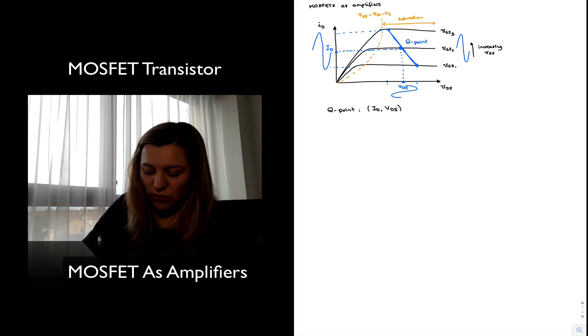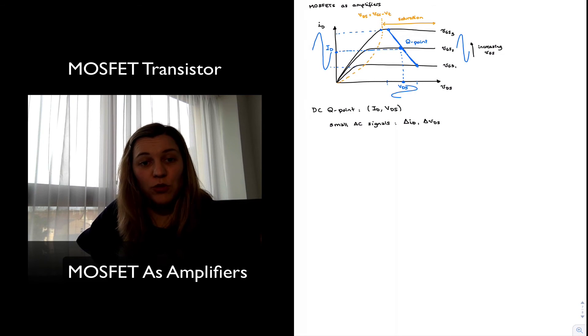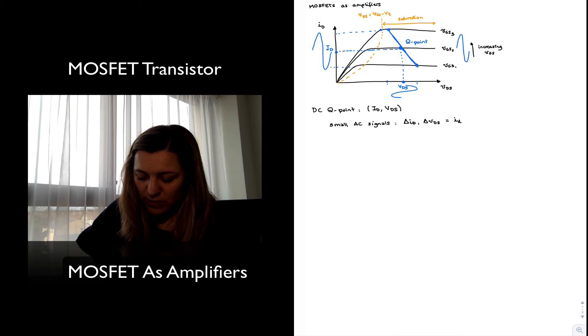When I am referring to variations, my deltas, those are the small AC signals. My delta ID, my delta VDS. And I'm going to be representing those with lowercase letters, lowercase subscripts.